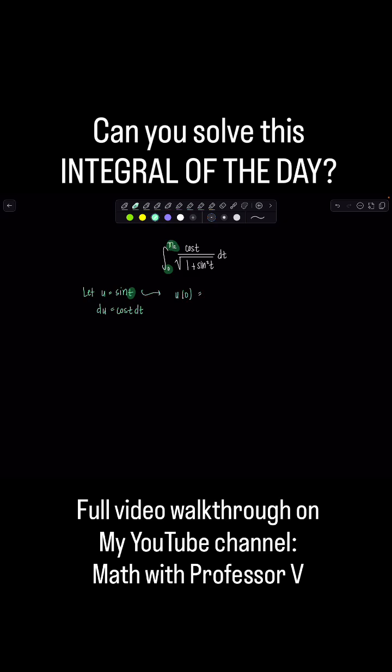So u of 0, my lower limit, is sine of 0 which is 0, and then u of pi over 2, the upper limit, is sine of pi over 2 which is 1.